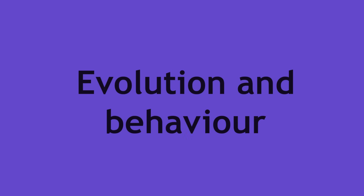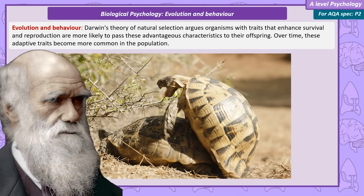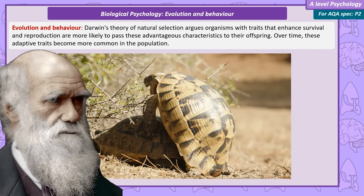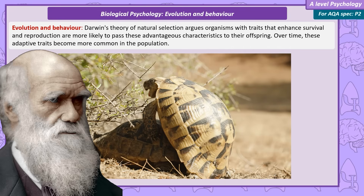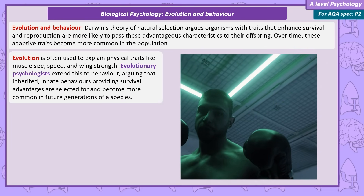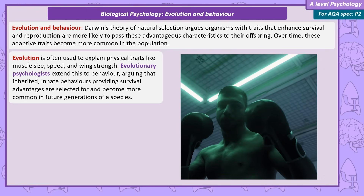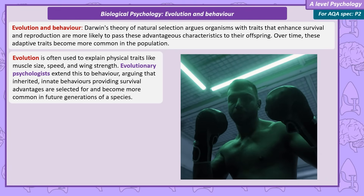Evolution and behaviour. You're likely aware of the basic principles of evolution from biology. This is Darwin's idea that organisms adapt to their environment through natural selection. Creatures with characteristics that make them more likely to survive and breed pass these characteristics onto future members of the population — in other words, adaptive characteristics are selected for. Generally evolution is used to explain physical characteristics, but evolutionary psychologists argue that behaviour is also inherited. An innate behaviour that gives a survival advantage is selected for and becomes more common in future members of a species.